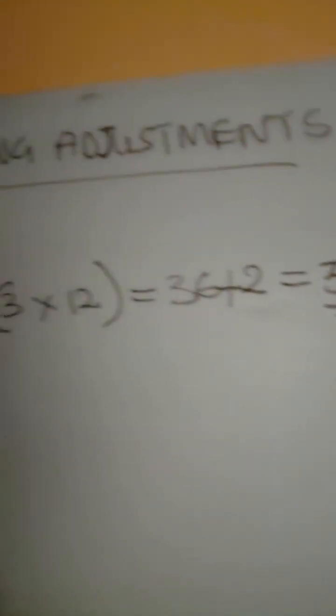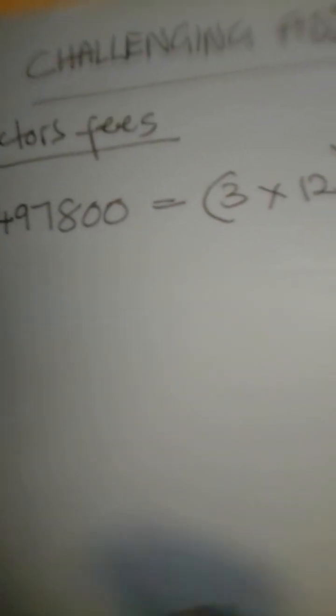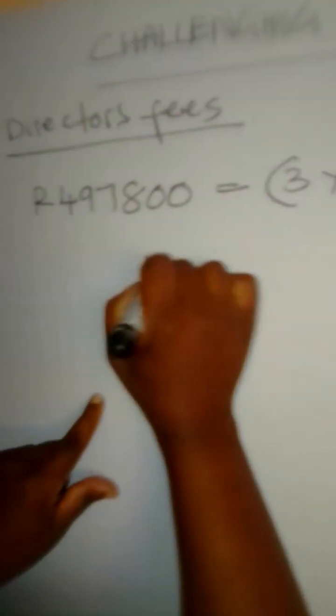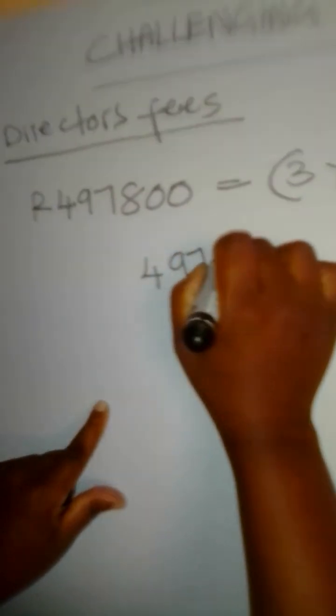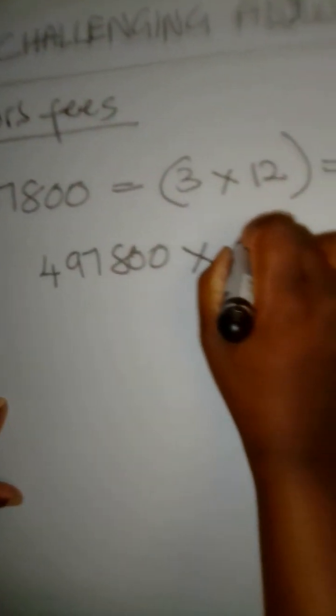The reason why we are doing this calculation, we want to find the prepaid expense. We want to find that money that was paid in advance. So then how do we find the money for the two months? So it's simple. Now we come here to say $497,800 multiply by two months over 38 months.